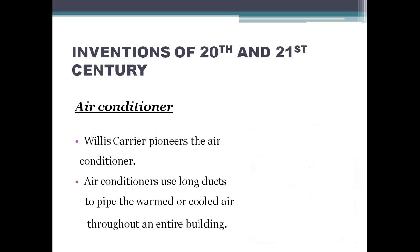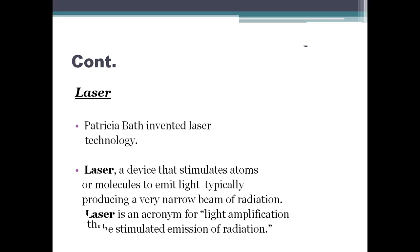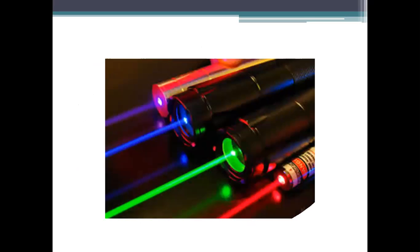Inventions made in the 20th and 21st century. First is the air conditioner. Willis Carrier pioneered the air conditioner. It uses long ducts to pipe warm or cool air throughout an entire building. Next is the laser, invented by Patricia Bath. A laser is a device that stimulates atoms or molecules to emit light of a shorter wavelength, producing a very narrow beam of radiation. Laser is an acronym for Light Amplification by the Stimulated Emission of Radiation. Here is a picture of the laser.